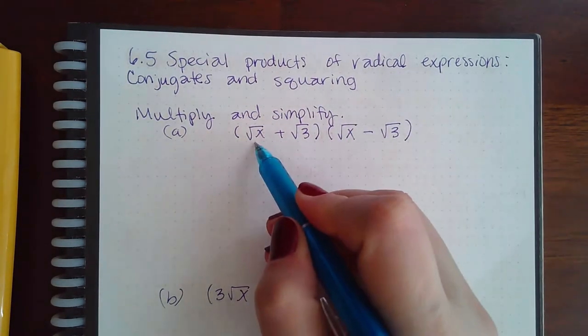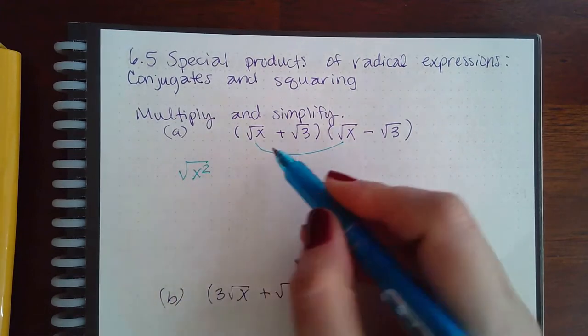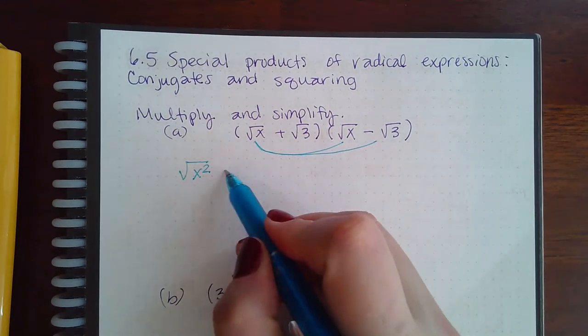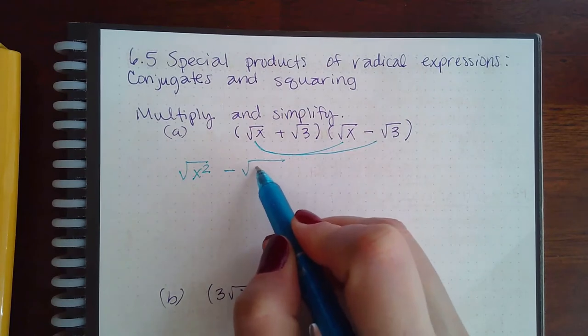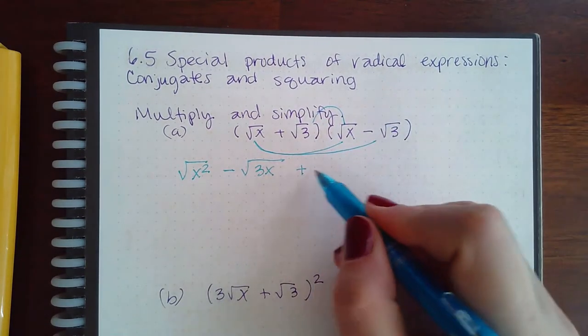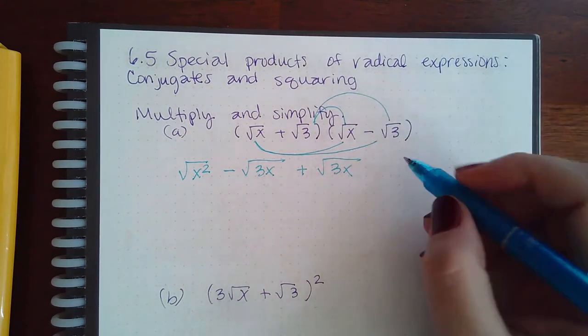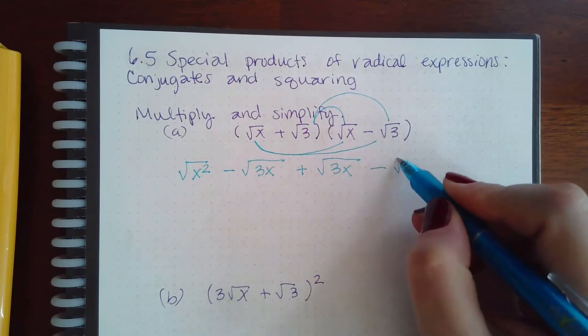So we're going to multiply these two, that gives me the square root of x squared. We're going to multiply these two, that gives me minus the square root of 3x. We're going to multiply these two, that gives me positive square root of 3x. And then we're going to multiply these two, which gives me negative square root of 9.